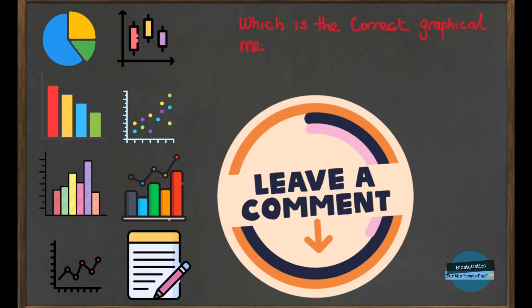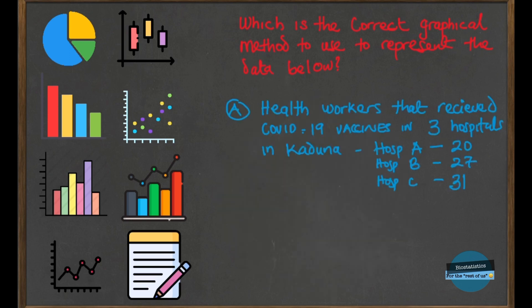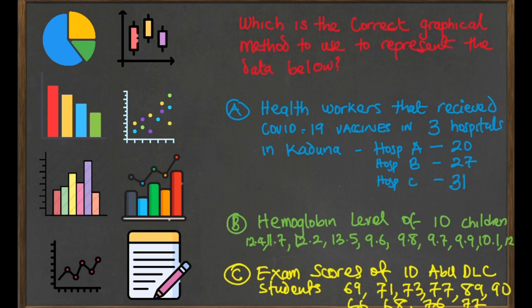To wrap things up, here are some questions — please put your answers in the comment section below. What is the correct graphical method to use to represent the following data: first, health workers that received COVID-19 vaccines in three facilities; second, hemoglobin level of 10 children; and third, exam scores of 10 students? I'd like to see your answers.